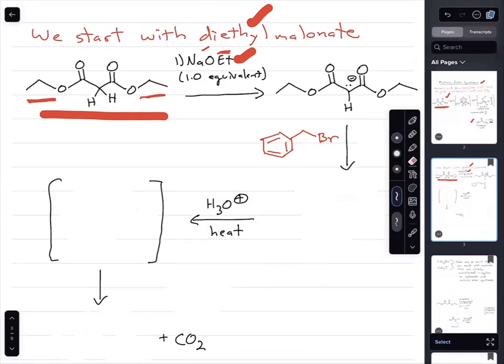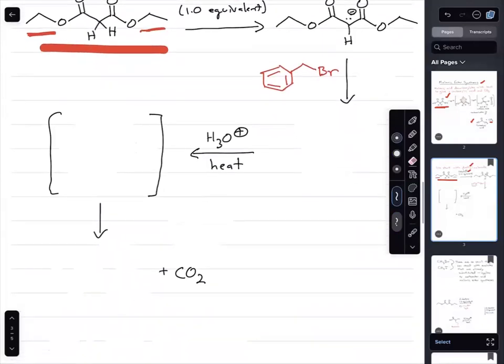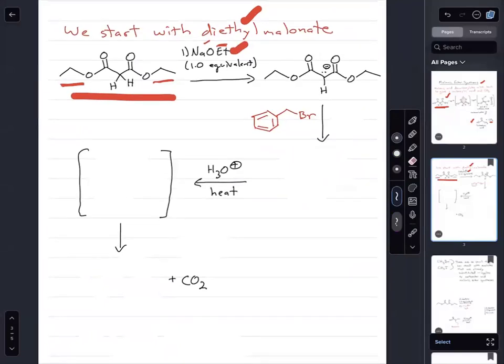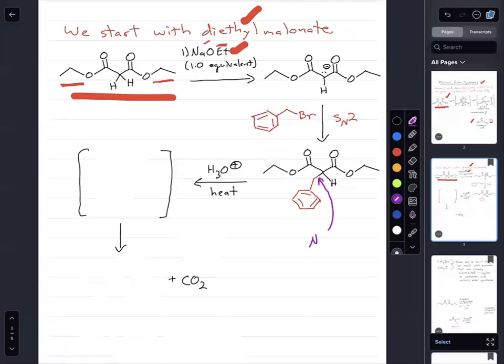The pKa is in the 13 range so that sodium ethoxide is strong enough to quantitatively convert it to the enolate. When that happens, we have now made a strong nucleophile that can react via an SN2 reaction. That gives us a new carbon-carbon bond created between the enolate and the carbon with bromine.